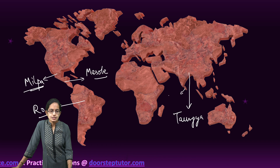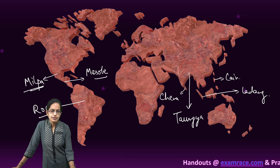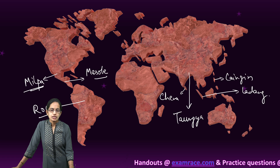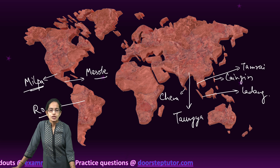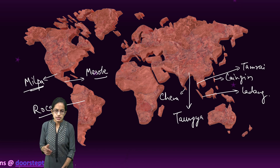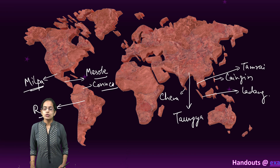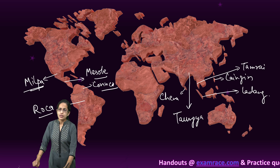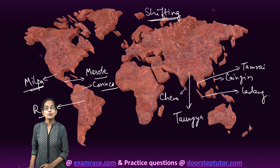In Sri Lanka it is called chena; in Indonesia it is known as ladang; in the Philippines it is known as kaingin; in Thailand it is known as tamarai; in Vietnam it is known as ray; and in Venezuela it is known as conuco. These are the various names for shifting cultivation across the globe.